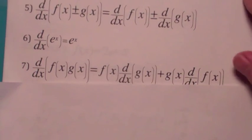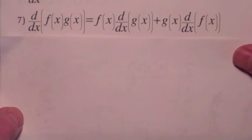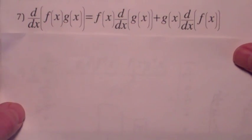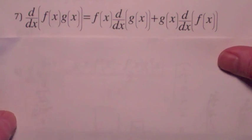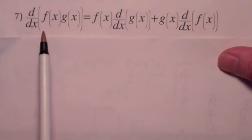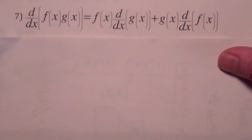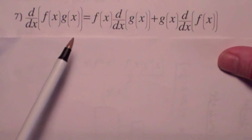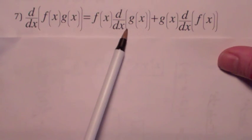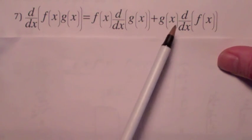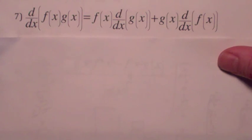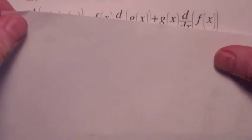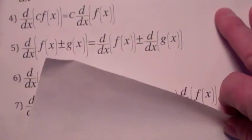The first rule I want to talk about today is the product rule. It talks about how to differentiate the product of two functions. When you differentiate a product — and we'll prove this in class — it's not the product of the derivatives. In fact, it's the first function times the derivative of the second, plus the second function times the derivative of the first. You can look at this in either order because you're adding. Let's look at an example.